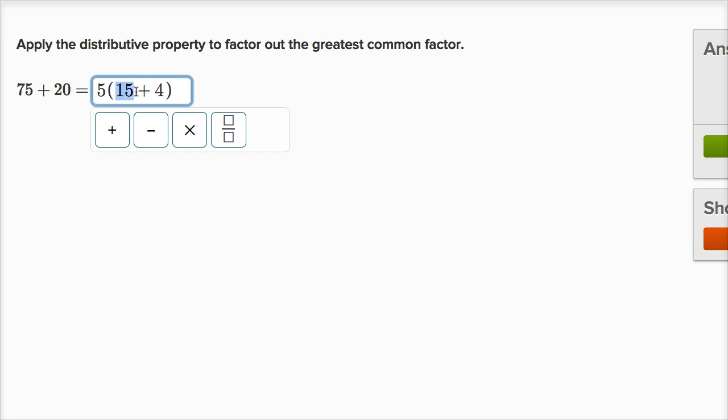And let's see, did I do this right? 15 and four don't have any factors in common. And if I were to apply the distributive property here, I would have five times 15 is 75, five times four is 20. Yeah, I'm feeling good about that. You got it right.